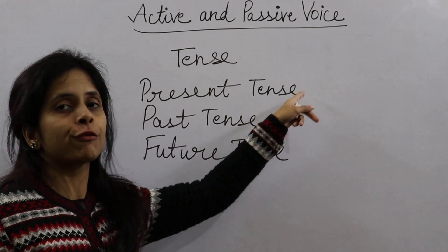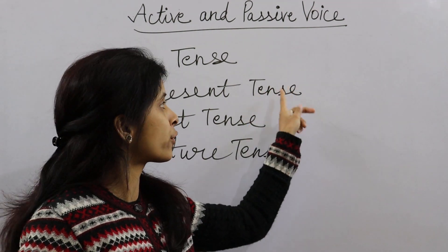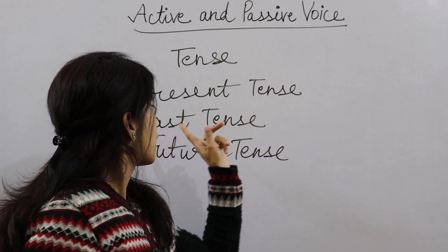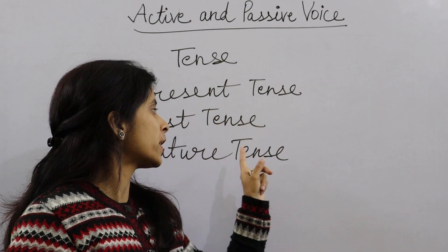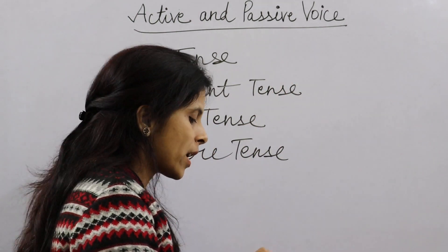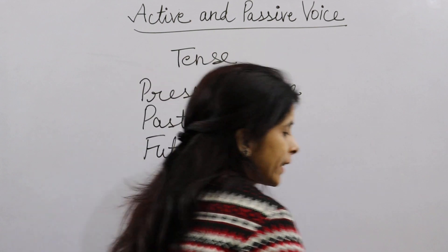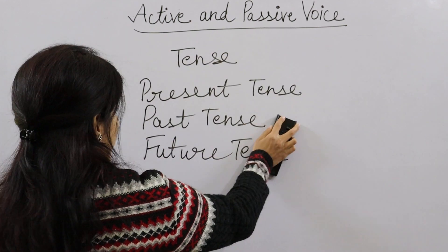Now there are four parts of each. Present tense is of four types, past tense is of four types, and future tense is also of four types. So today we will discuss present tense active and passive voice.